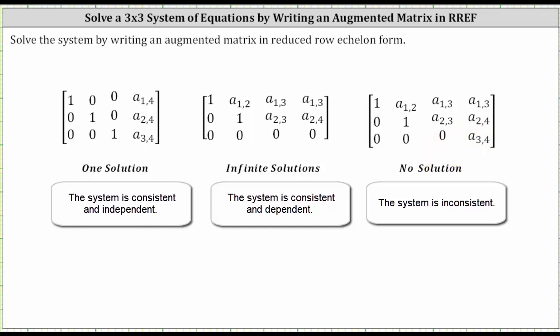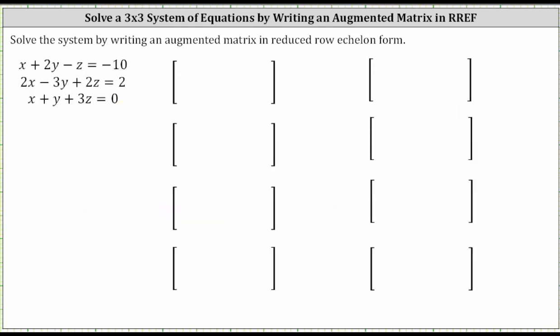Our goal is going to be to try to write the augmented matrix in the one-solution form. Going back to the problem, first notice how all the equations are in standard form, meaning the x, y, and z terms are on the left and the constants are on the right, and therefore the equations are in the correct form to write the augmented matrix.